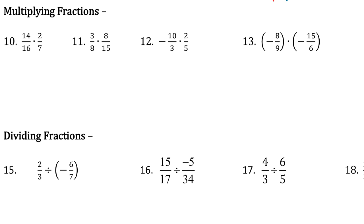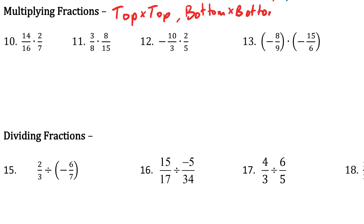We're going to start off by multiplying. There are two different ways that we can do this. I'm going to show one for the first example and then do the others a little differently. The idea is you're always just multiplying top times top, bottom times bottom, and then we always have to reduce. Our only real choice is where we reduce — at the beginning or at the end.